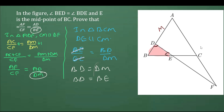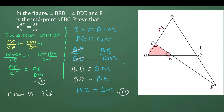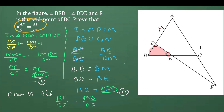From equations 1 and 2: BE is equal to DM. So from equation 1, AF over CF equals AD over DM, and replacing DM with BE we get AF over CF equals AD over BE. That is what we needed to prove.